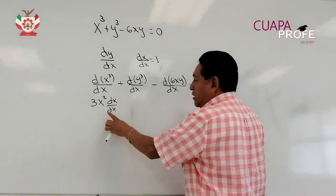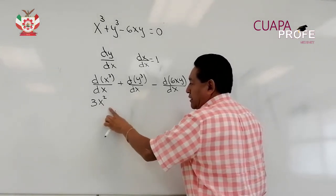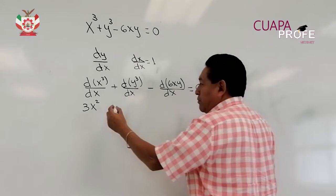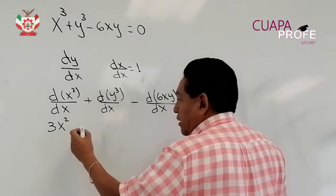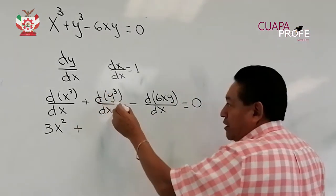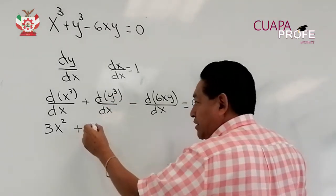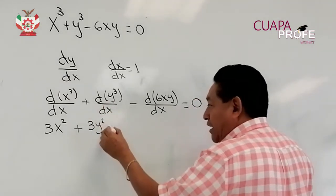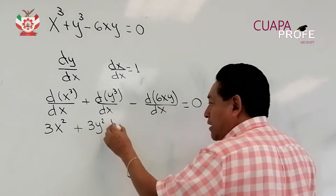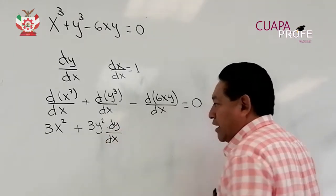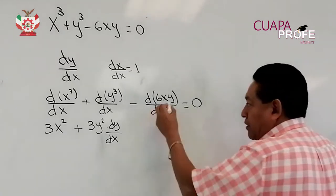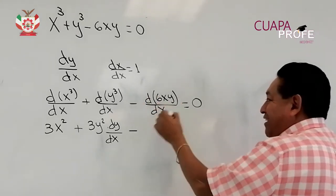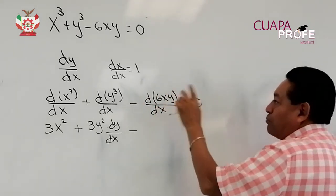La derivada de x cúbica únicamente es 3x cuadrada. Luego vamos a derivar y cúbica: tendremos más la derivada de y cúbica con respecto de x, que será 3y cuadrada. Aquí sí es necesario escribir por la regla de la cadena la derivada de y con respecto de x. Luego sigue el siguiente término algebraico, que sería menos, y aquí vamos a hacer una doble derivada porque es un producto.